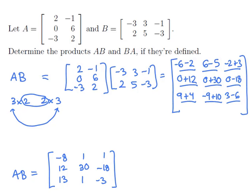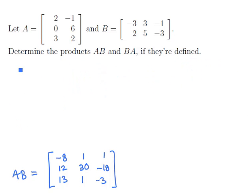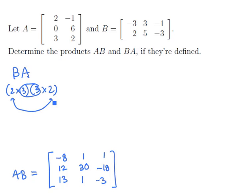Now let's focus on the other product, BA. Again, let's check whether BA even makes sense. B is a 2 by 3 matrix and A is a 3 by 2 matrix. The values on the insides match, so the product is defined, and the final product will be a 2 by 2 matrix. So let's work it out.